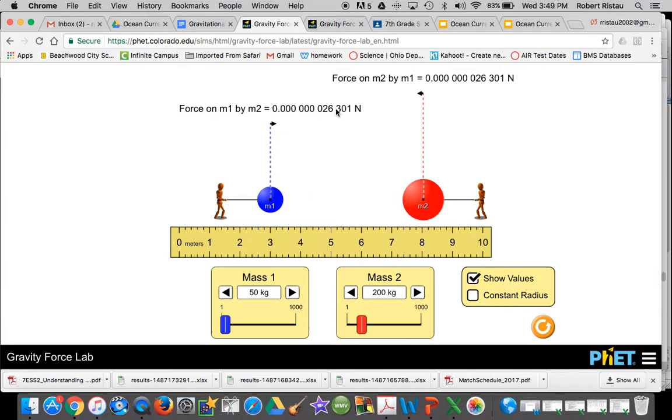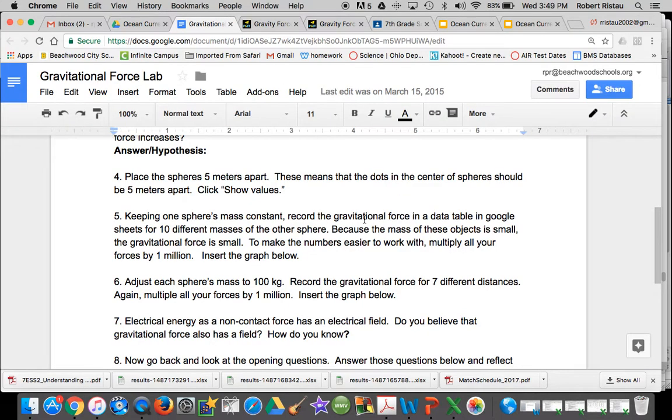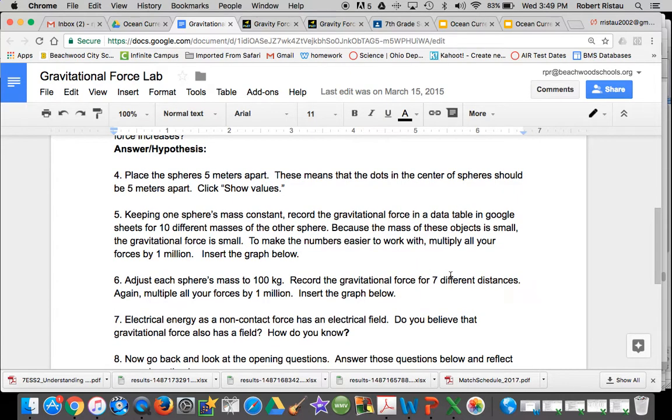So it's going to be really hard for us to keep track of the data and not make mistakes with all these zeros. So here's what I want you to do, and I tell you this in the procedure, is that because the masses of the objects are so small, to make it easier, I want you to multiply all your forces by 1 million.